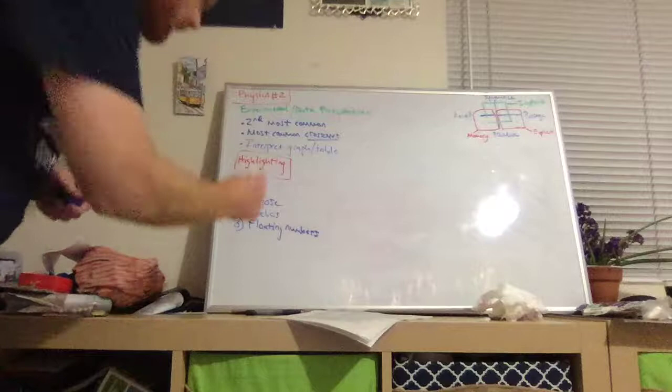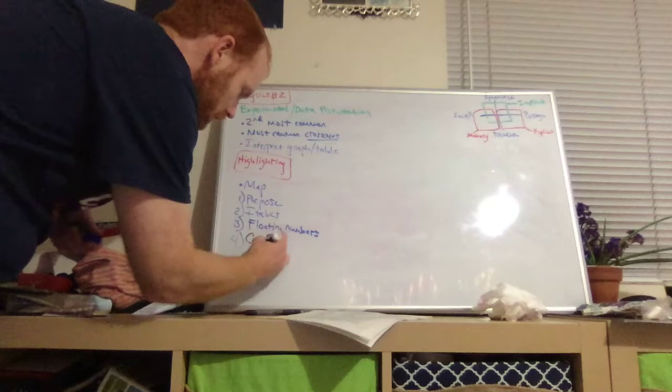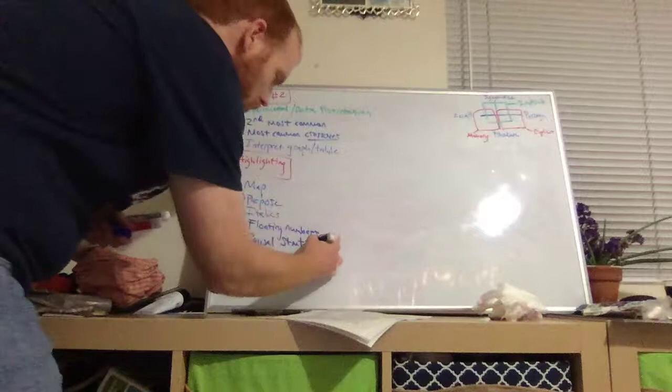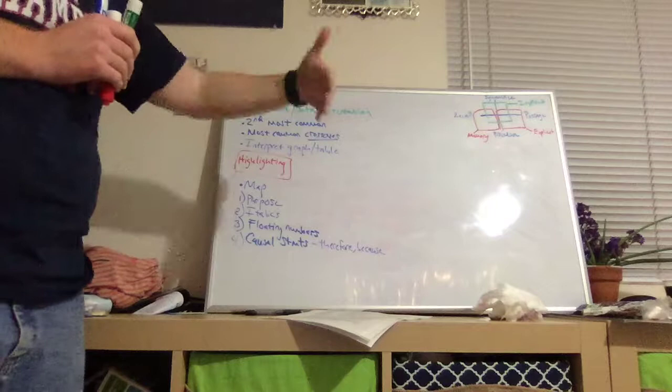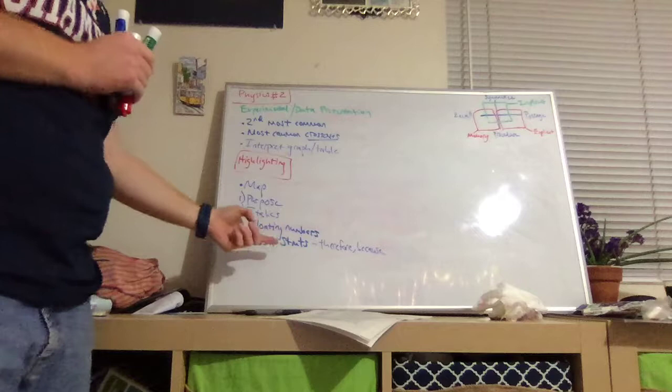A fourth thing that would be important to highlight are what we call causal statements. And causal words are words like therefore or because. So those statements that are preceded by or following therefore and because tell us why something happens. It's a causal statement. That could be important to highlight when you're building your map.